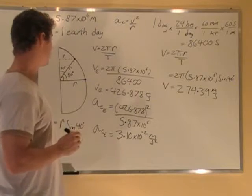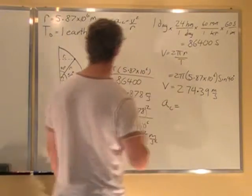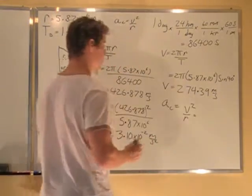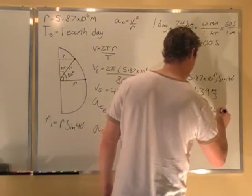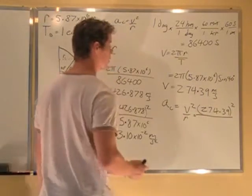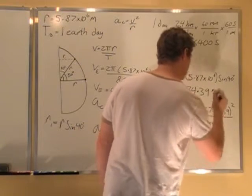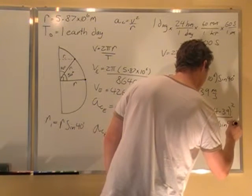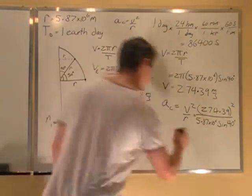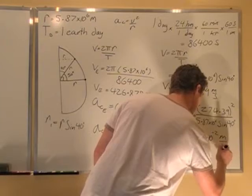So the next thing I'm going to do is figure out the centripetal acceleration. The centripetal acceleration is v squared over r, which is just this, 274.39 squared over r, which is 5.87 times 10 to the 6, sine 40, gives me centripetal acceleration, 2.00 times 10 to the minus 2 meters per second squared.